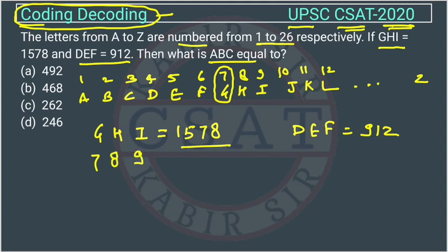GHI should be 789 according to us, but they have given 1578. What is the relation between these? If we see, 1578 is twice of 789.